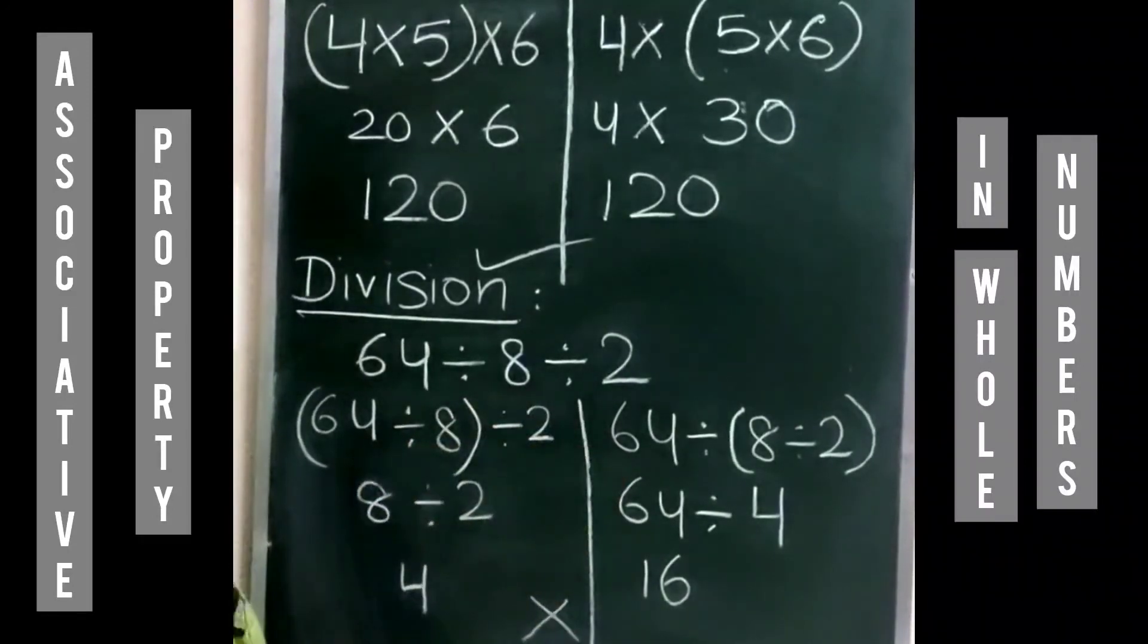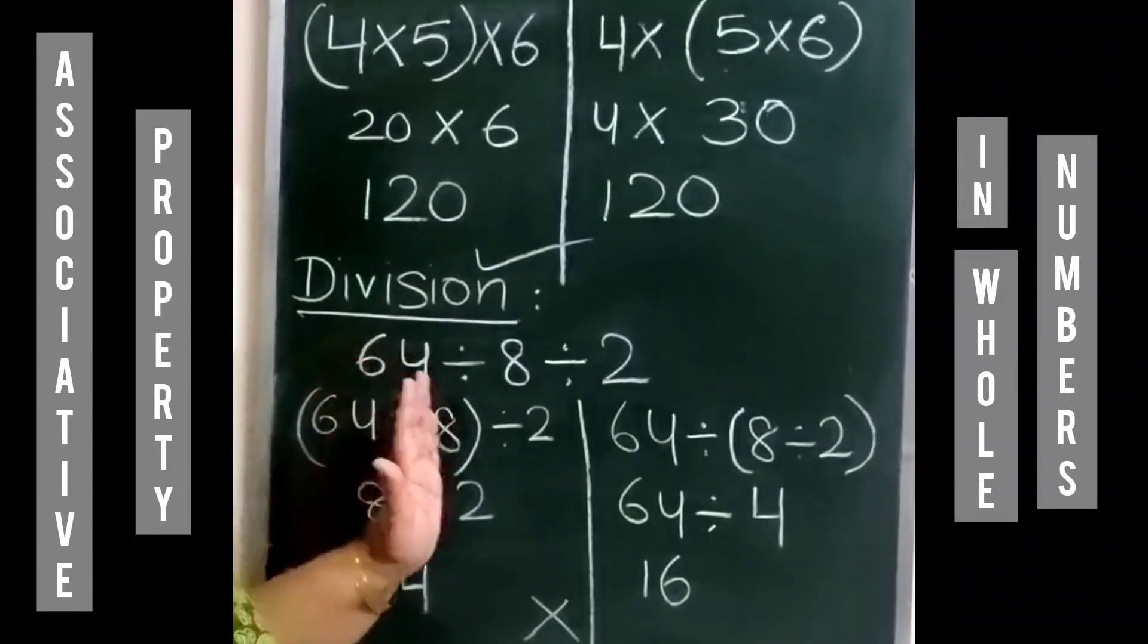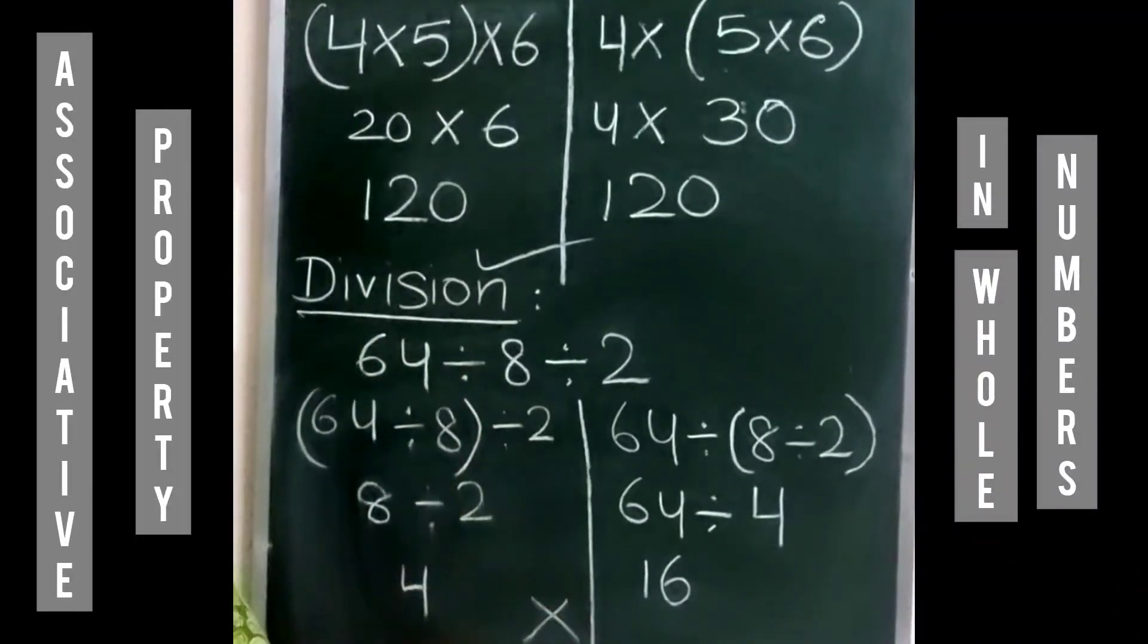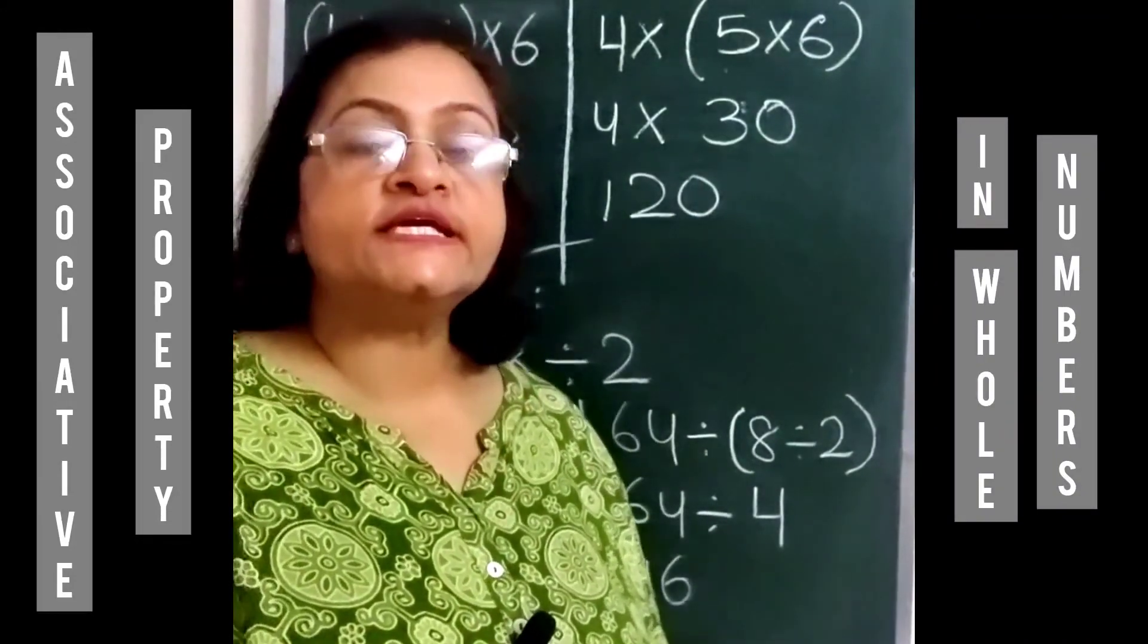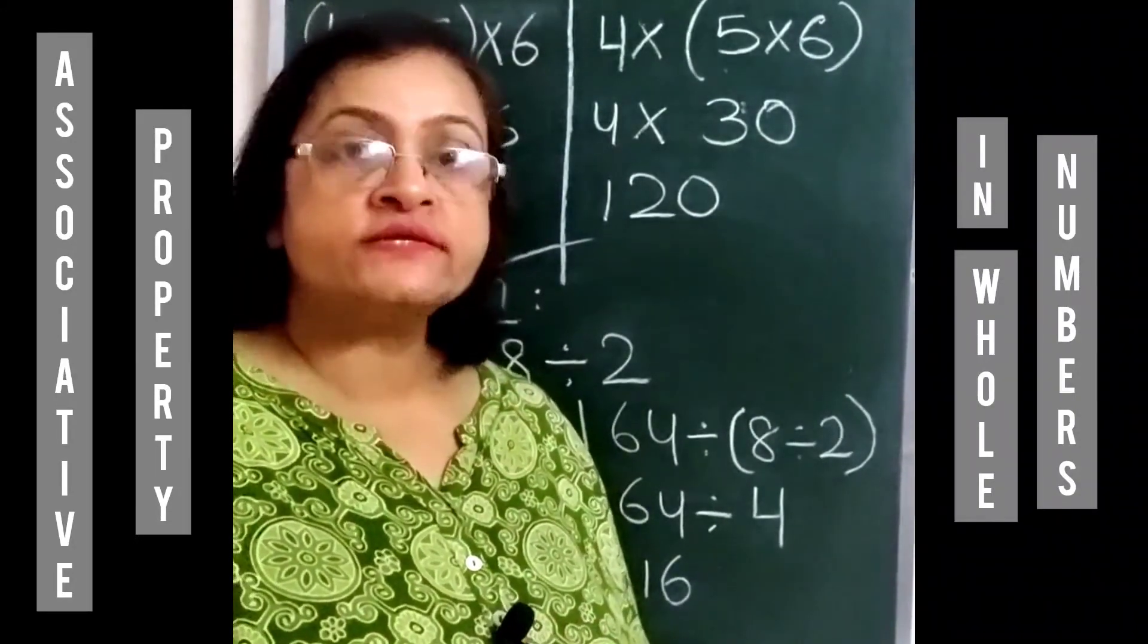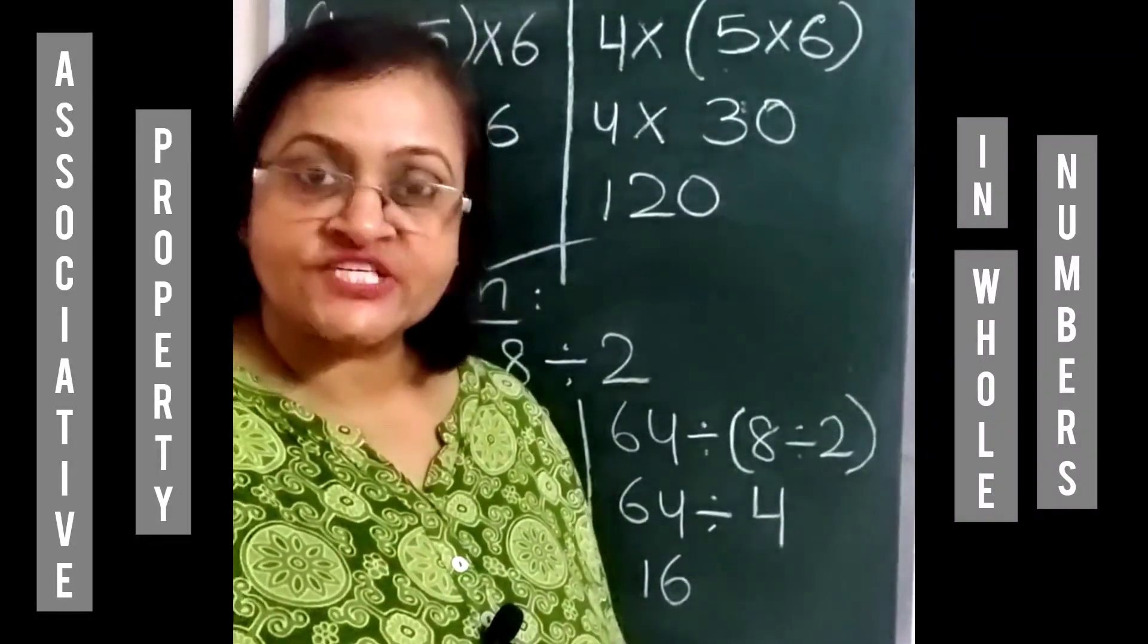Division - for division, the associative property is not true. If we change the grouping of numbers, then quotients will also be different. That means associative property is true for addition and multiplication, but it is not true for subtraction and division.